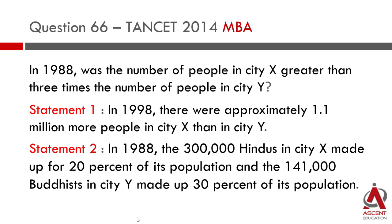The two statements that follow: Statement 1 — in 1998, there were approximately 1.1 million more people in city X than in city Y. Statement 2 — in 1988, the 300,000 Hindus in city X made up 20% of its population, and the 1,41,000 Buddhists in city Y made up 30% of its population.